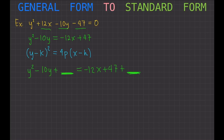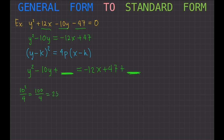Just like with a circle, we square the coefficient and it doesn't matter if it's negative or positive because squaring always gives a positive result. So we take 10 squared over 4, which gives us 100 over 4, and that equals 25. So we add 25 to both sides.